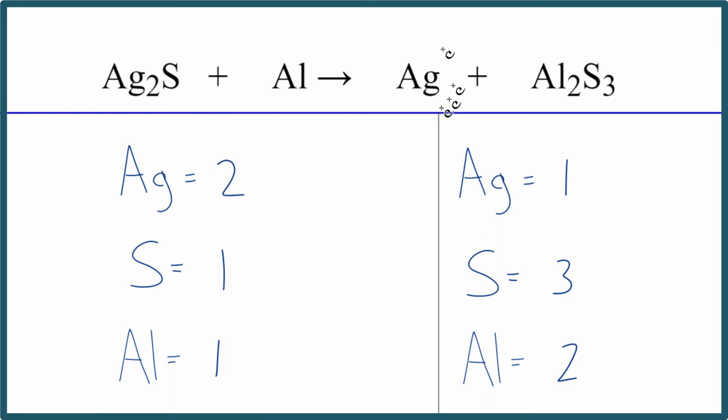Let's leave the Ag till last because all we need to do is put a coefficient in front. That won't change anything. Let's balance the sulfur. So we have three here and one here. I'm going to put a three in front of my Ag2S. So now I have one times three. That gives me three sulfur atoms. Those are balanced.